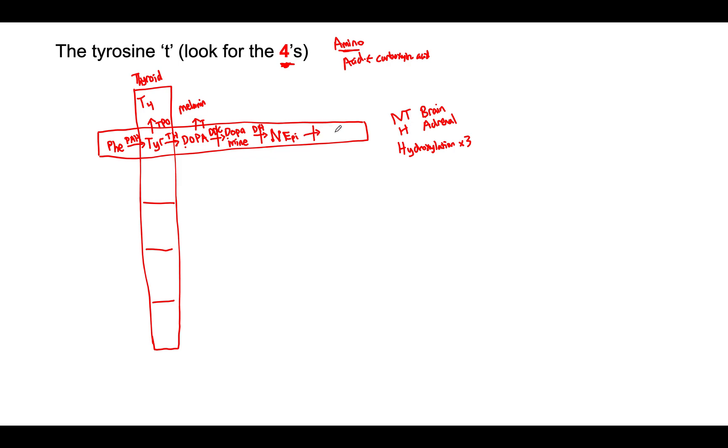The last step is going to take norepinephrine into epinephrine, and this is actually going to be a methylation reaction. So you may have heard of the enzyme PNMT, phenylethanolamine N-methyltransferase, which converts norepinephrine into epinephrine. And that's the end of the pathway. That's all you need to know for this pathway.